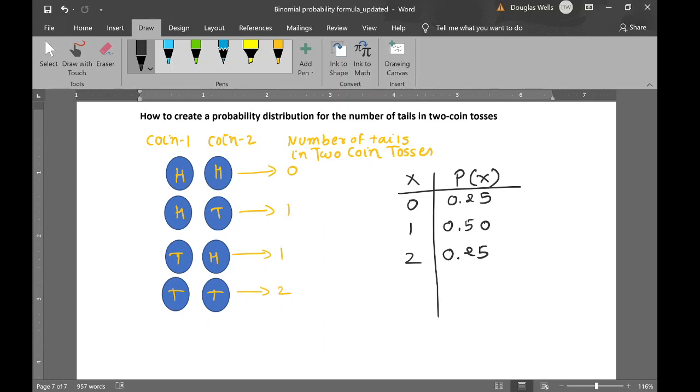Second condition, sum of the probability with respect to each random variable has to equal 1. In our case, yes, it does. Second condition satisfies.